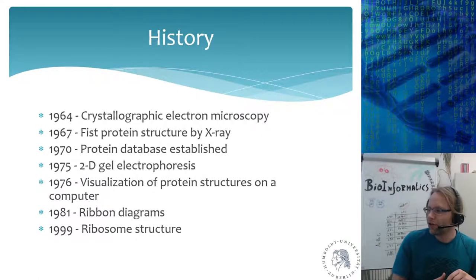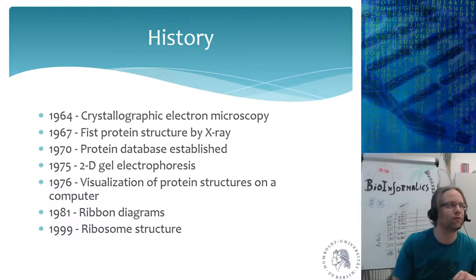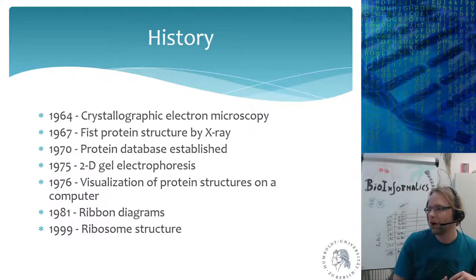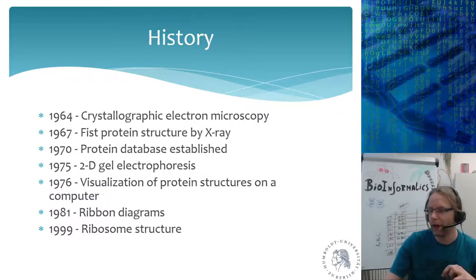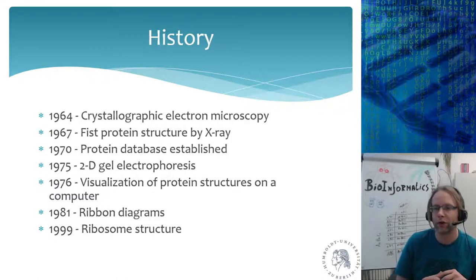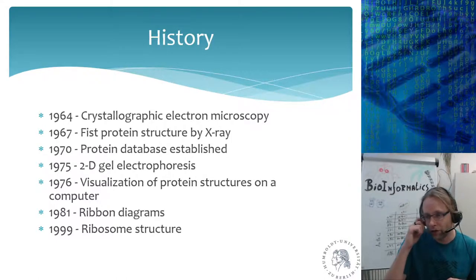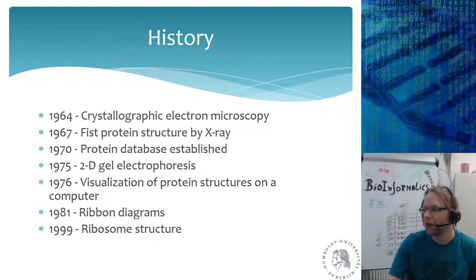In 1976, there was a major advancement in computer graphics — the first visualization of a protein structure. Similar to what I showed in the RNA lecture when we looked at the ribosome, this was the first time anyone used a computer to visualize a 3D protein structure. In 1981, the ribbon diagram was invented — an easy way to write down the 3D or tertiary structure of a protein. In 1999, the ribosome structure was more or less solved using X-ray diffraction experiments combined with computer modeling.